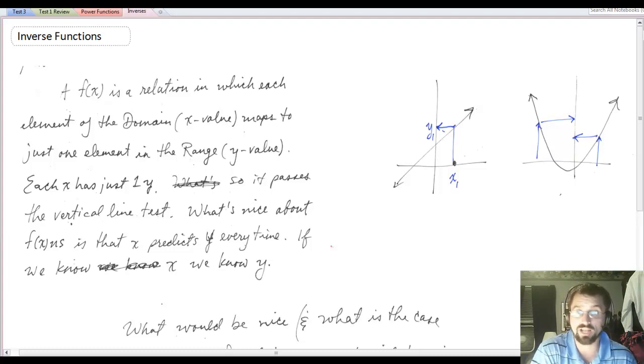A function we know is a relation in which each element of the domain, which are x values, maps to just one element in the range. Those are our y values. The nice thing about functions is each x has just one y. That's actually why we say y is a function of x, because it's x's function to determine what y is. And we say that the function passes the vertical line test. So that's what's nice about functions, that x predicts y every time. If we know x, we know y.